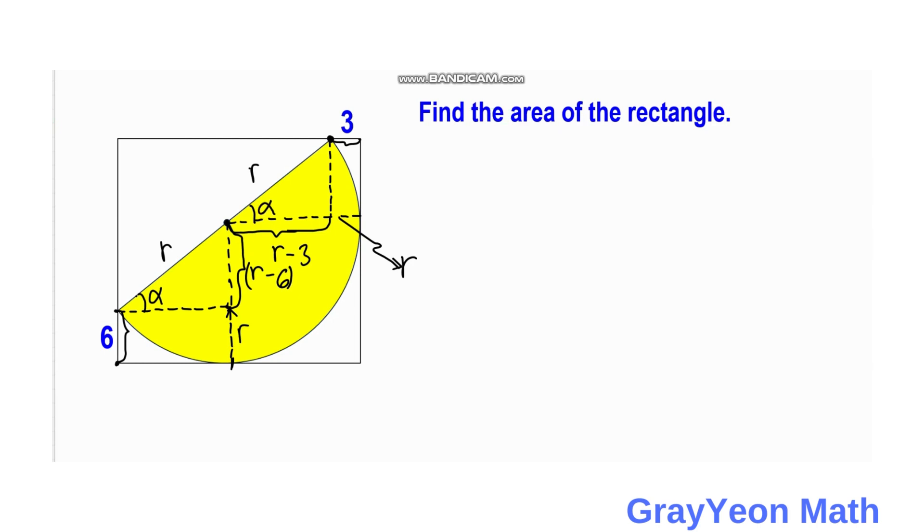And since we form a right triangle, and if that is a right triangle then this angle should be a complementary angle with alpha. So let us call this angle as beta, a complementary angle.